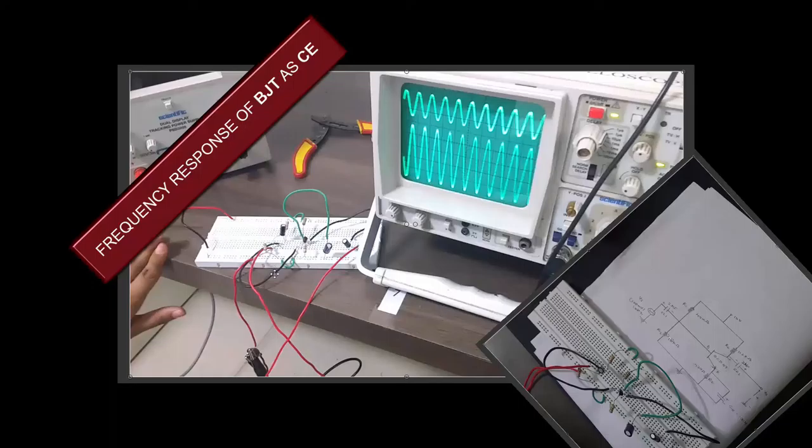This is all about the frequency response of the circuit of BJT as a common emitter amplifier. That's all for today. Thank you.